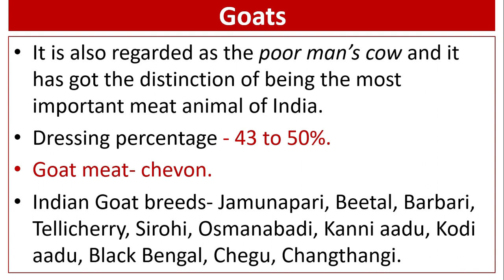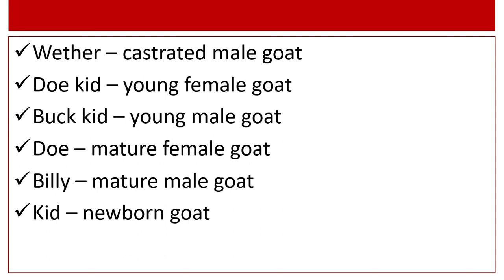Goats are regarded as the poor man's cow and have the distinction of being the most important meat animal of India. Dressing percentage is 43 to 50 percent. Goat meat is known as chevon. Indian goat breeds include Jamunapari, Beetal, Barbari, Tellicherry, Sirohi, Osmanabadi, Kanniadu, Kodiyadu, Black Bengal, Chegu, Changthangi, etc. Wether means castrated male goat. Kid means young goat; buck kid means young male goat; doe kid means young female goat. Mature female goat is known as doe; mature male goat is known as billy. Newborn goat is known as kid.